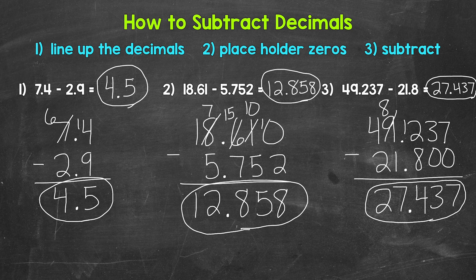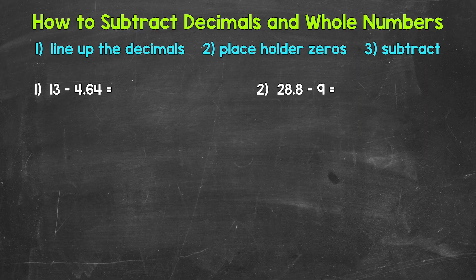So there's our section on subtraction involving two decimals. Let's move on to decimals and whole numbers. Whenever we have a subtraction problem involving a decimal and a whole number, we use the same steps we use when subtracting two decimals: line up the decimals, use placeholder zeros if necessary, and subtract.